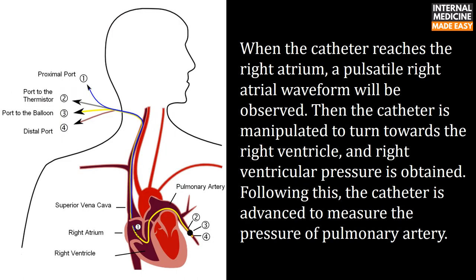When the catheter reaches the right atrium, a pulsatile right atrial waveform will be observed. Then the catheter is manipulated to turn towards the right ventricle, and right ventricular pressure is obtained. Following this, the catheter is advanced to measure the pressure of the pulmonary artery.